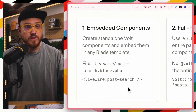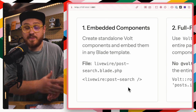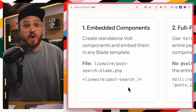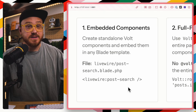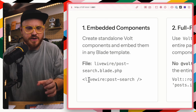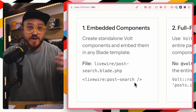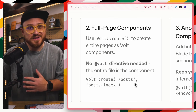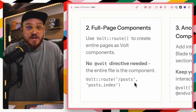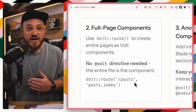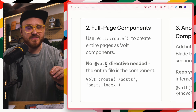When it comes to adding Livewire Volt components to your application, there are three ways to do it. First, you can embed your components — this is what you might think of with any Livewire related structure, whether class-based with a separate class PHP file and a view, you would still use the Livewire colon syntax with your component name, and this works the same way within Volt. Next, you have full page components, where you can point a route directly to a component.